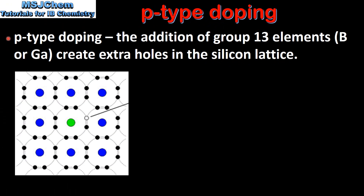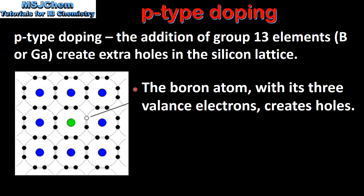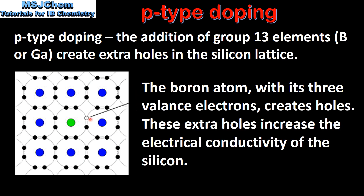Next we look at P type doping. The addition of group 13 elements such as boron or gallium creates extra holes in the silicon lattice. In this diagram we have the silicon atoms with their blue nuclei and one atom of boron with a nucleus colored in green. The boron atom with its 3 valence electrons creates holes in the silicon lattice. These extra holes increase the electrical conductivity of the silicon.